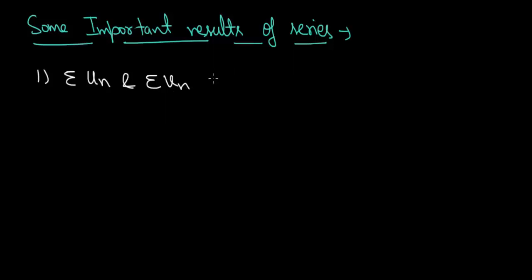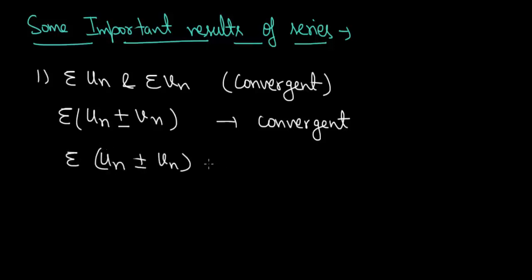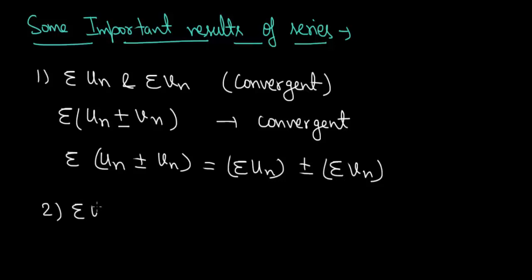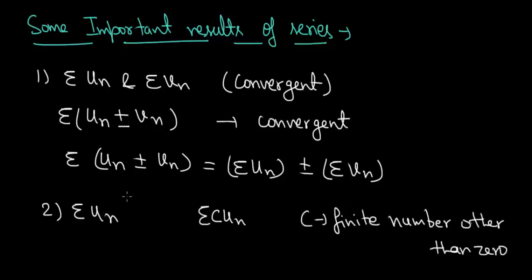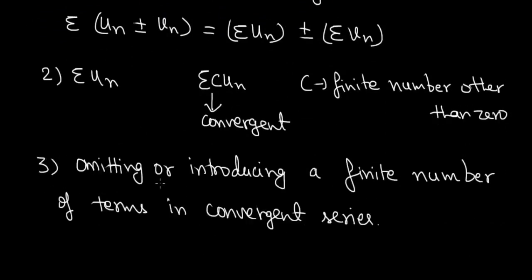Some important results: First, if sigma uₙ and sigma vₙ are two convergent series, then their sum or difference is also convergent, since sigma(uₙ ± vₙ) = sigma uₙ ± sigma vₙ. Second, if we multiply any convergent series sigma uₙ by a finite non-zero constant c, the result is convergent. Third, if we omit or introduce any finite number of terms in a convergent series, the series remains convergent.